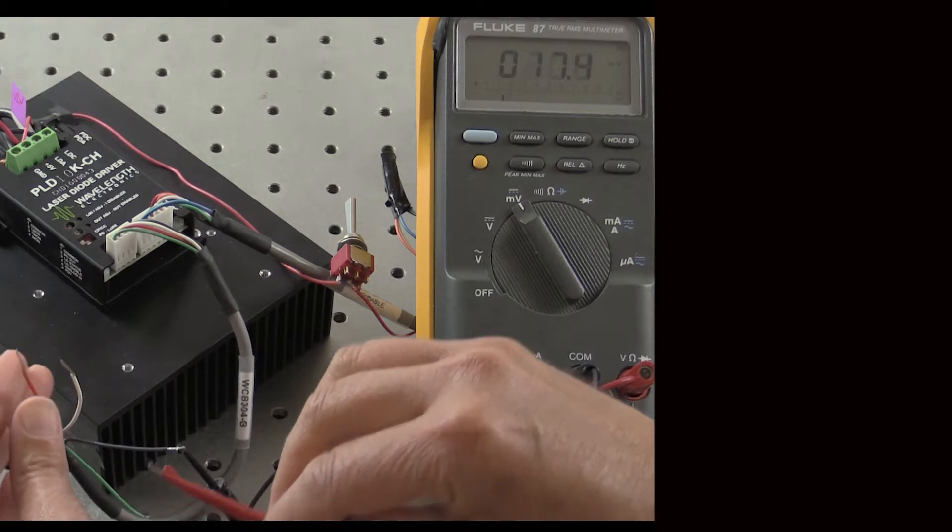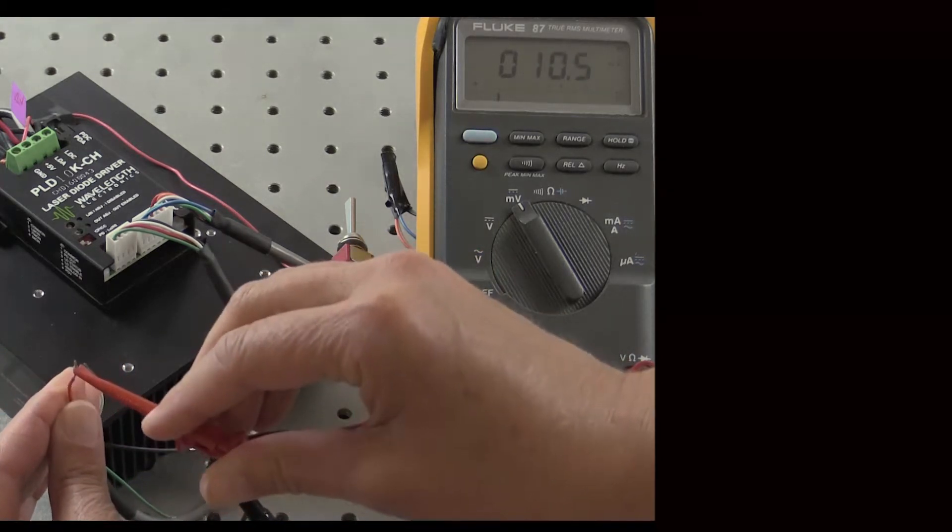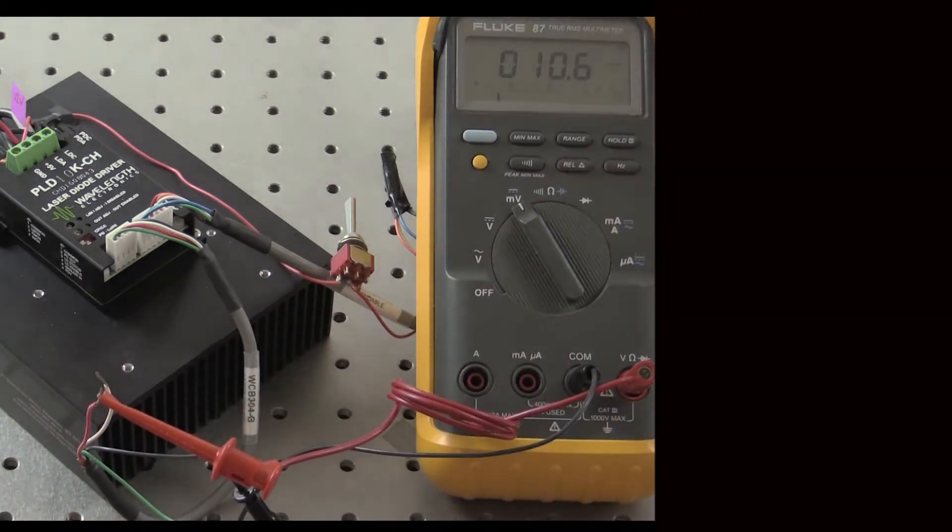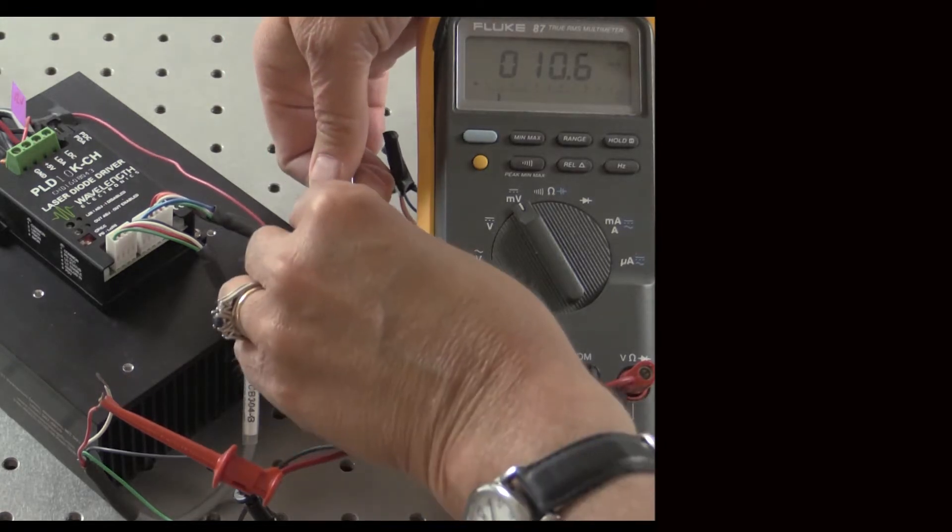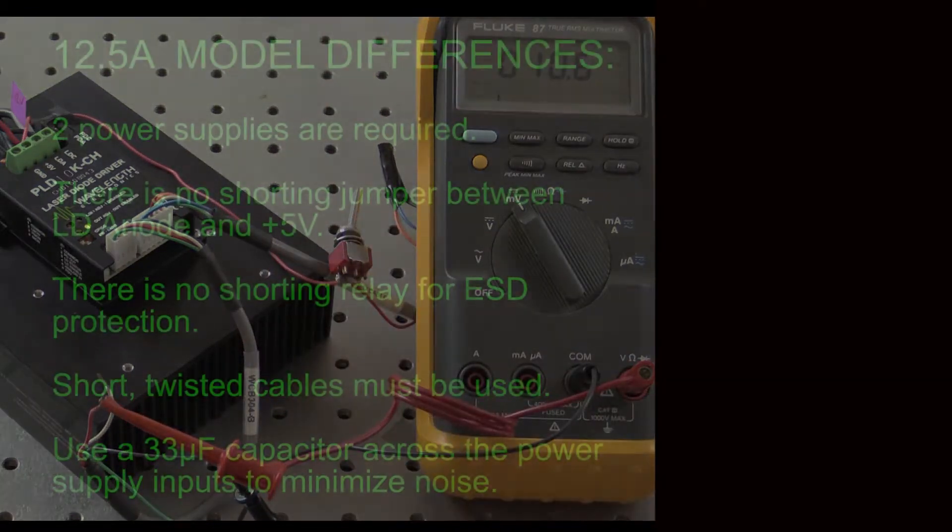Instead of monitoring I-Mon, move the multimeter to P-Mon and calculate the expected voltage based on the P-Mon transfer functions.